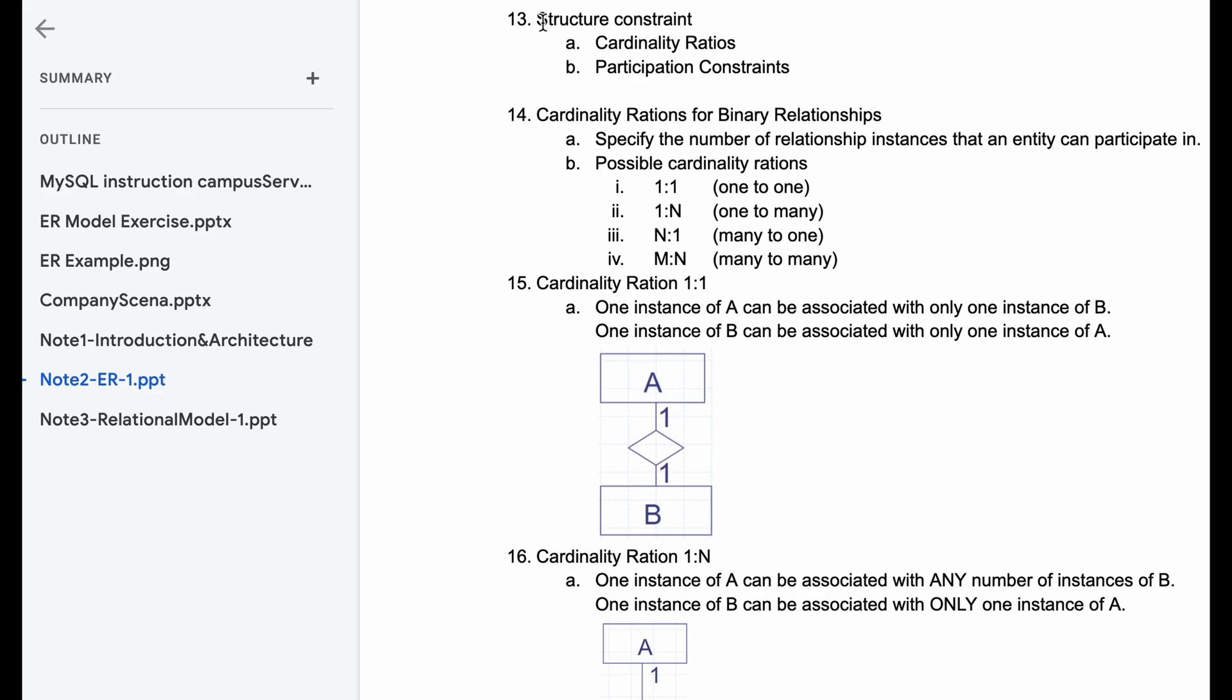We now look at structure constraint. For structure constraint, we have cardinality ratios and participation constraints.